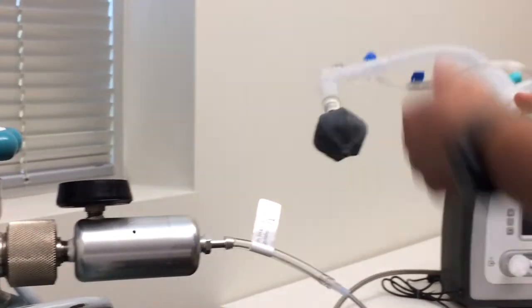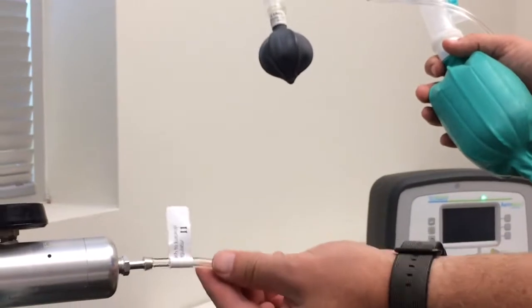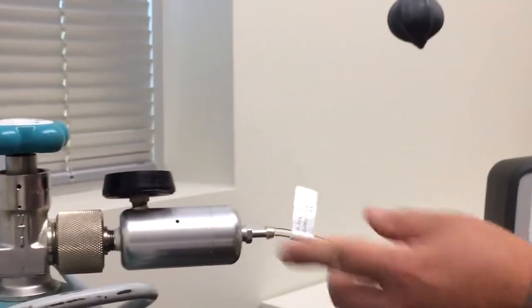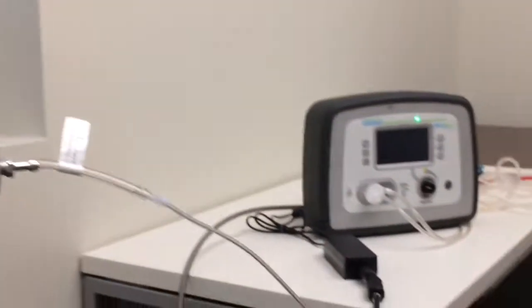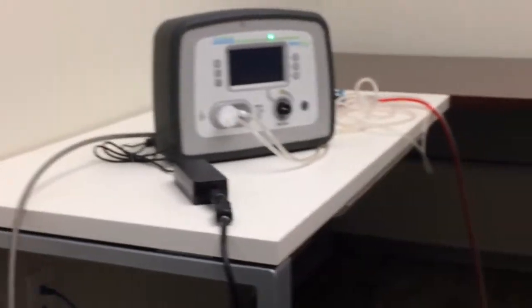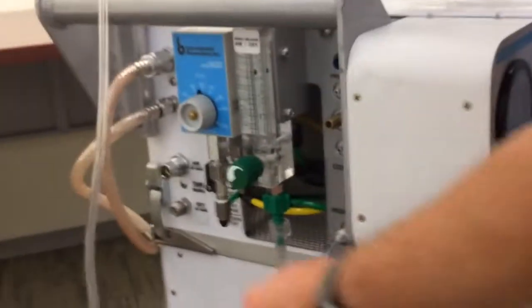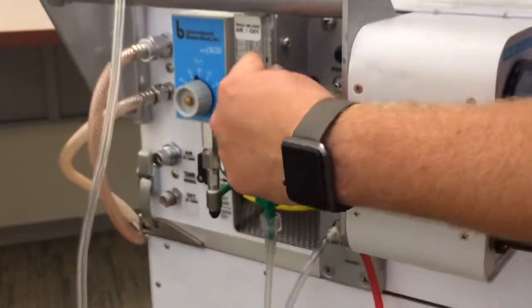We make the special bags that have the tube that attaches to the nipple on the regulator. The other part of the bag hooks to the flow meter. You set it at 10 liters per minute.